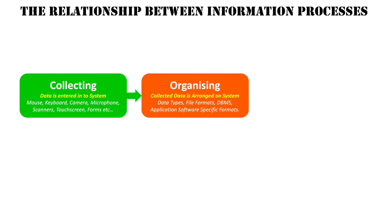Logically, once data goes into the system, it is arranged in some sort of format. Collected data is arranged by the system through the information process of organizing. It's given a data type or placed into a specific file format — it might go into a database or a database management system, or into a tabular format in a spreadsheet, or a pages-type format in a Word document. So the collected data is then organized within the system.